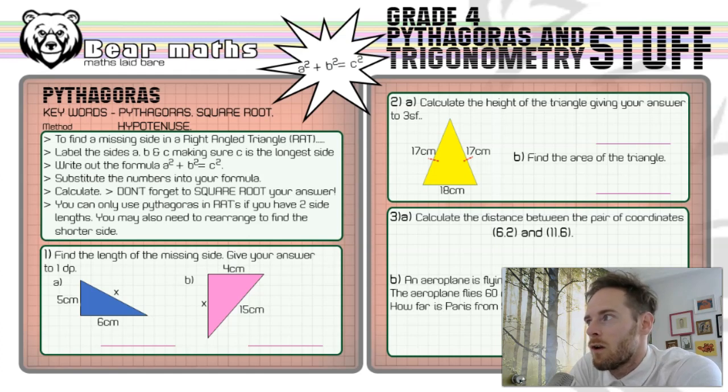So the keywords I've got for you are Pythagoras, square root and hypotenuse. Now Pythagoras is the branch of mathematics that allows us to work out side lengths, missing side lengths in right angle triangles as long as we've got two side lengths. The square root is when you undo a squared number. That's the inverse operation of squaring.